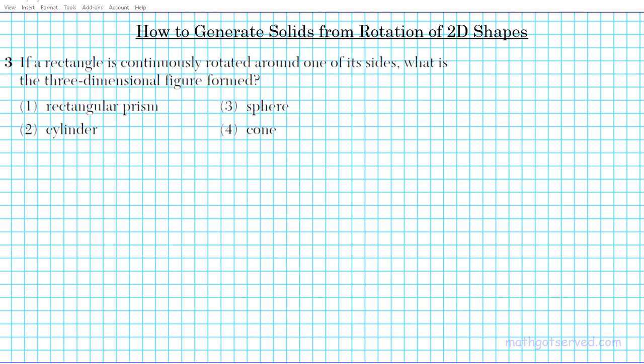All right, let's take a look at question three. Question three, we're going to be assessed on how to generate solids from rotating two-dimensional shapes. If a rectangle is continuously rotated around one of its sides, what is the three-dimensional figure formed?